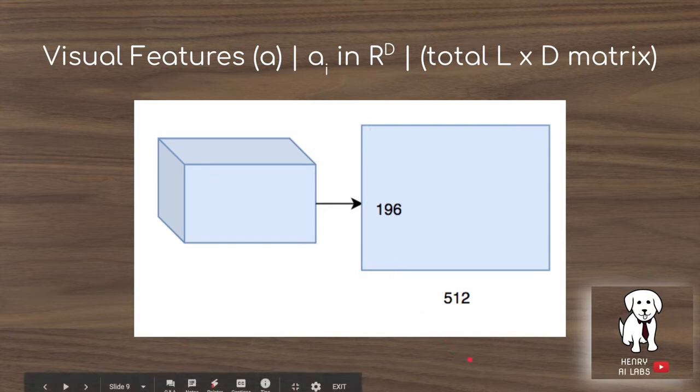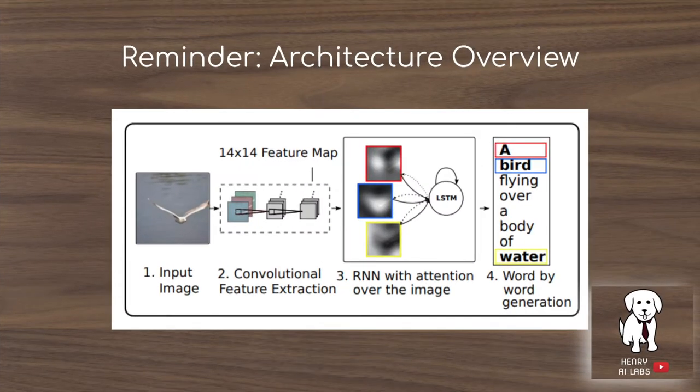The attention is going to dynamically look at this feature map and extract what's relevant for the LSTM decoder at each step of generating the description of the image. As a reminder of the architecture overview, this section right here is the convolutional feature extractor. These feature maps are going to be input to the RNN with attention as it produces the image caption.